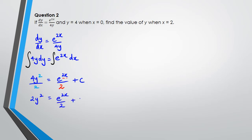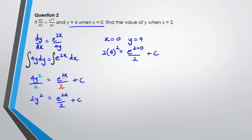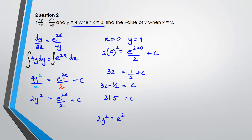Now I work out c using x = 0 and y = 4. Substituting: 2×(4²) = e^(2×0)/2 + c, so 32 = 0.5 + c, giving c = 31.5. The equation is now 2y² = e^(2x)/2 + 31.5. Next, I find y when x = 2.